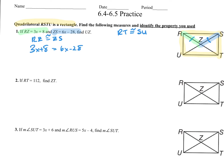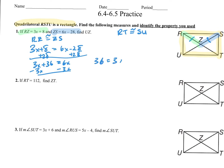So we solve for X. I'm going to add 28 to both sides and get 3X plus 36 equals 6X. I'm going to subtract 3X, and I get 36 equals 3X. Divide by 3, and we get X equals 12.